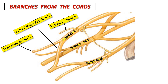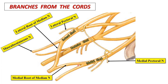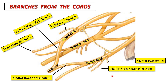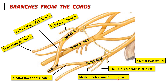Branches from the medial cord are: the medial pectoral nerve with a communicating branch toward the lateral pectoral nerve; the medial root of the median nerve, which unites with the lateral root of the median nerve to form the median nerve. It also gives off two cutaneous nerves: the medial cutaneous nerve of the arm, and lateral to that, the medial cutaneous nerve of the forearm. Then it continues as the ulnar nerve.